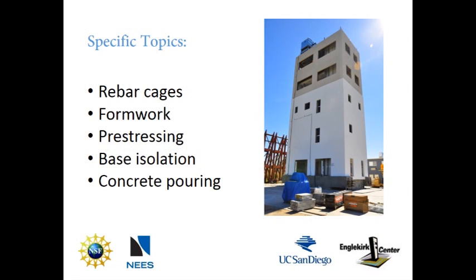A full-scale five-story building was built and tested at the Engelkirk Structural Engineering Center at the University of California, San Diego, and equipped with non-structural components. Specific topics that will be discussed include the construction of rebar cages, formwork, pre-stressing, base isolation, and the pouring of the concrete.